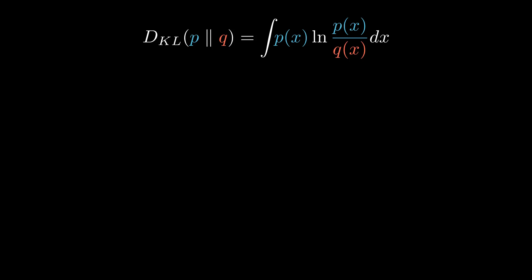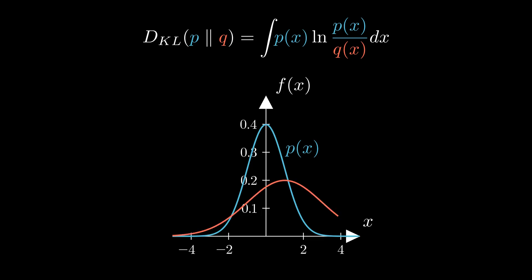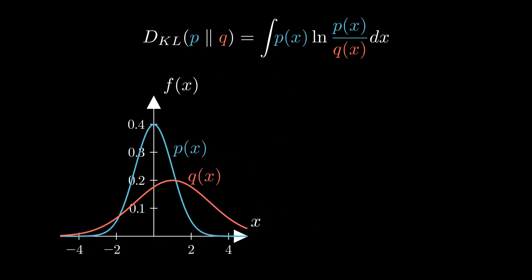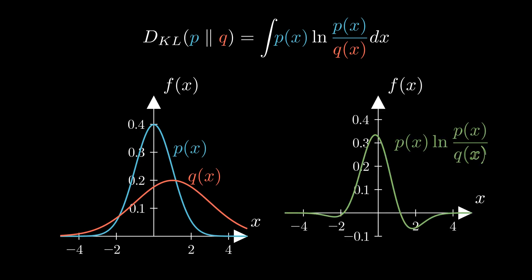Let's say we want to model the distribution P, but due to a lack of knowledge about it, the best guess we could come up with is the distribution Q. We can then draw a function described with the formula above and calculate its integral. The resulting value is KL divergence.